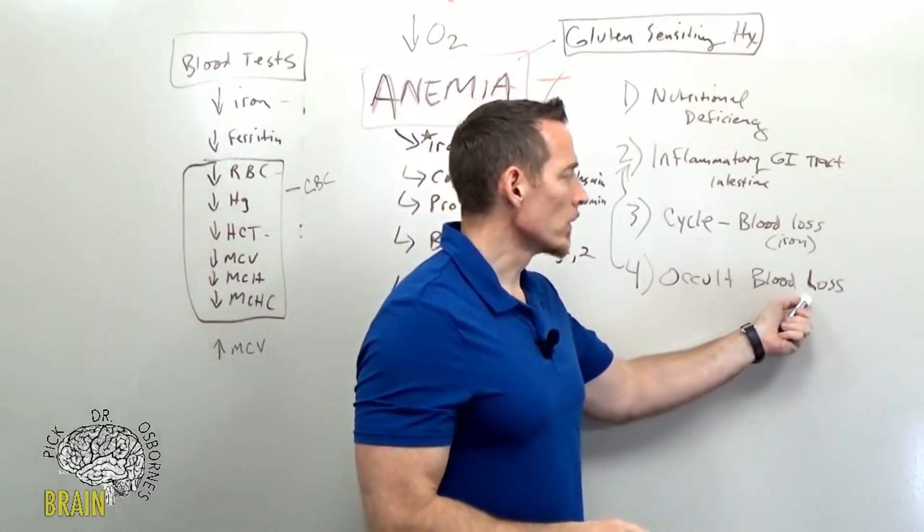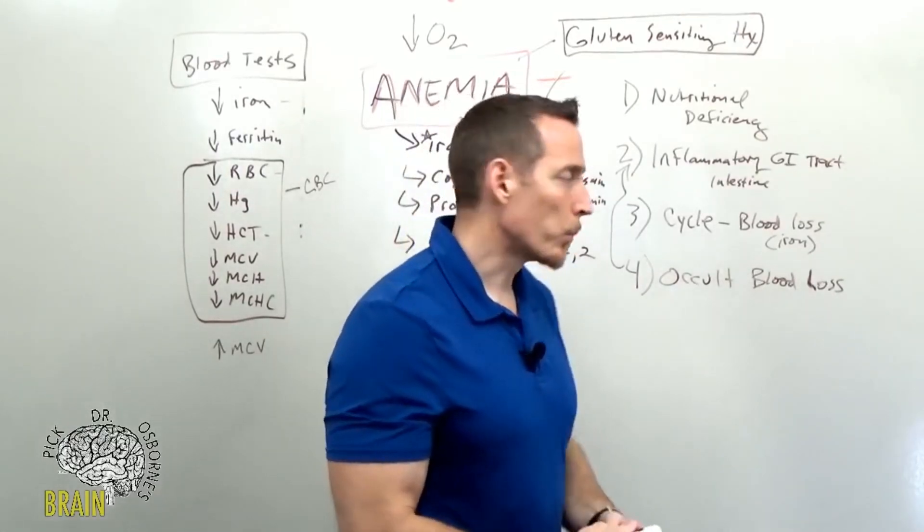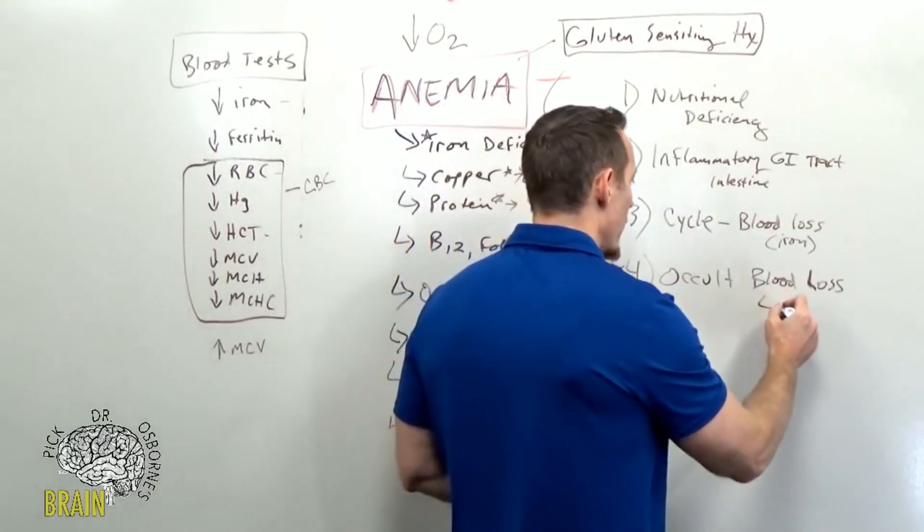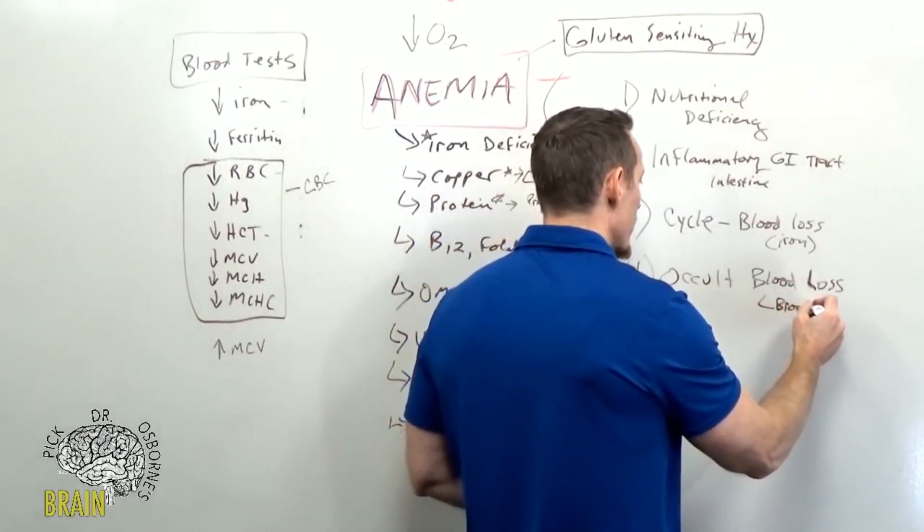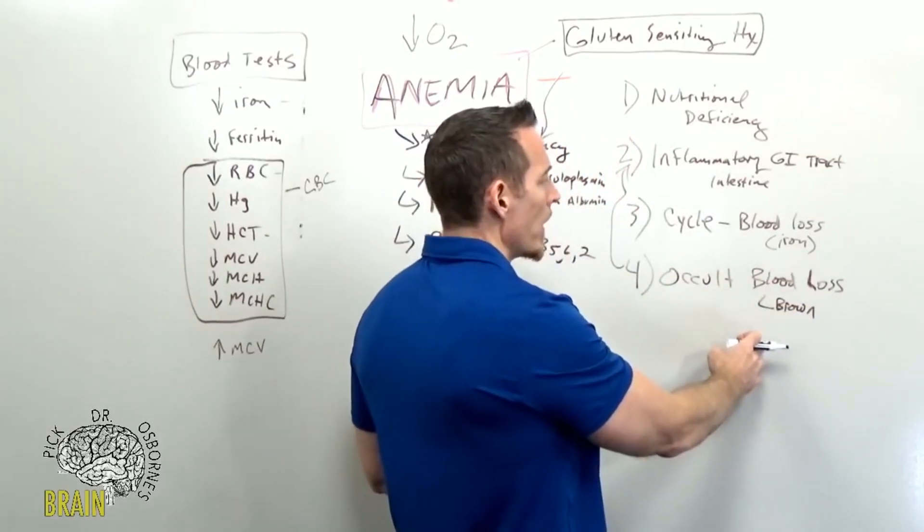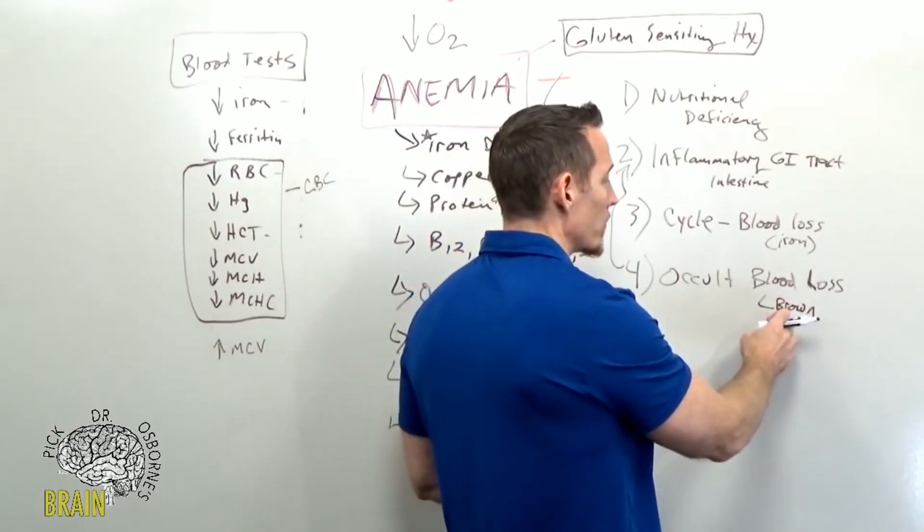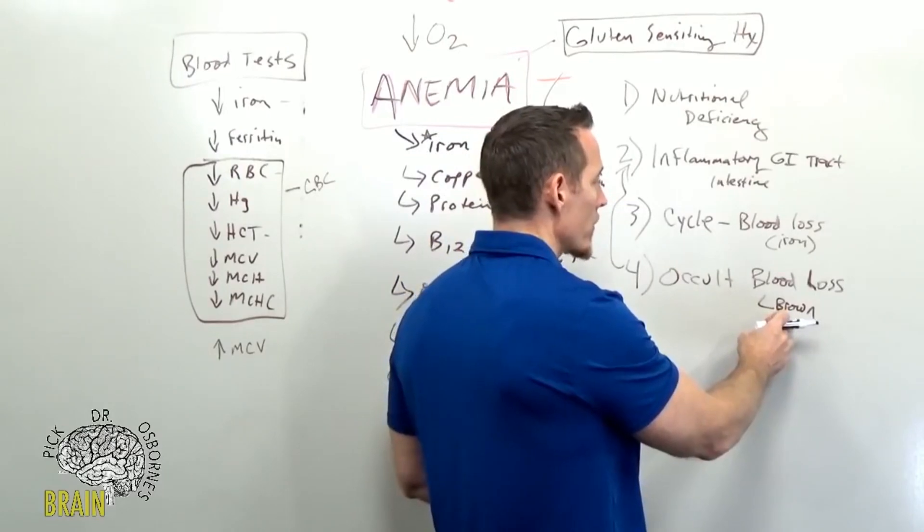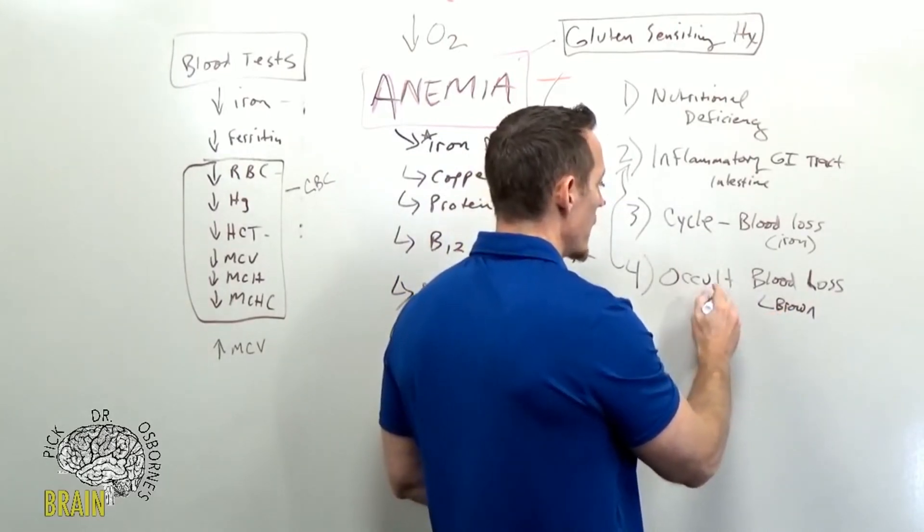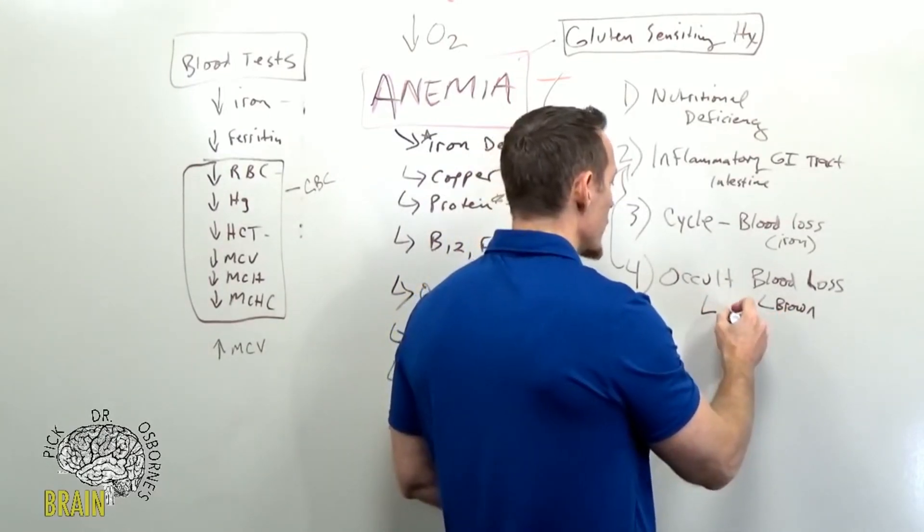So the blood turns brown, you don't really see that it's there. That's why it's called occult blood loss, because the color is not bright red, you don't really know that it's there. So one way to detect occult blood loss is to have a stool sample taken and they can check it for occult bleeding.